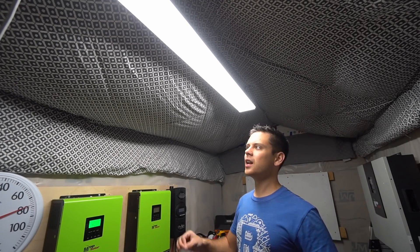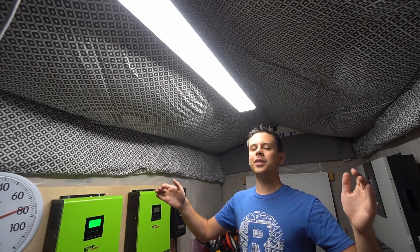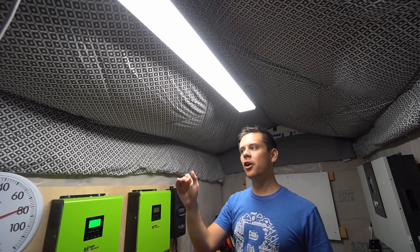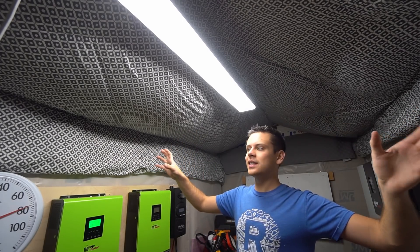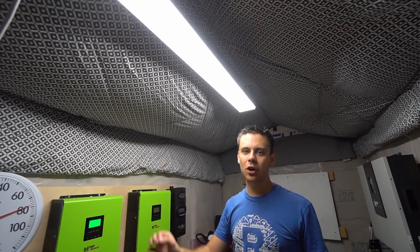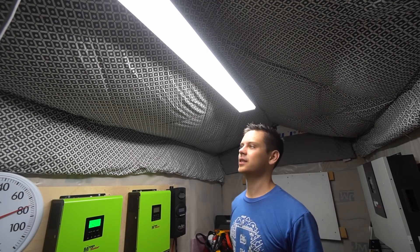So update number three for the solar shed - we have insulated the roof with a layer of reflectix foam and a blanket that covers the entire thing. My viewers were correct, it makes a huge difference.